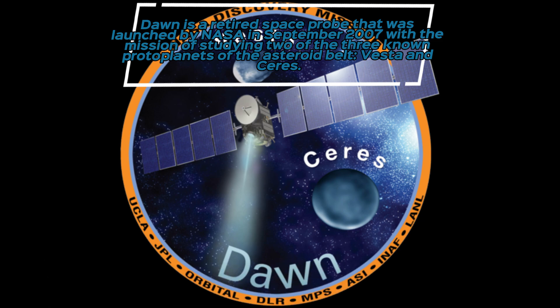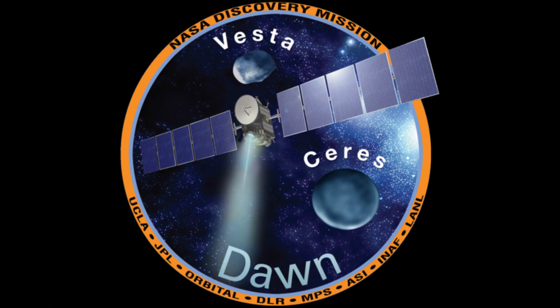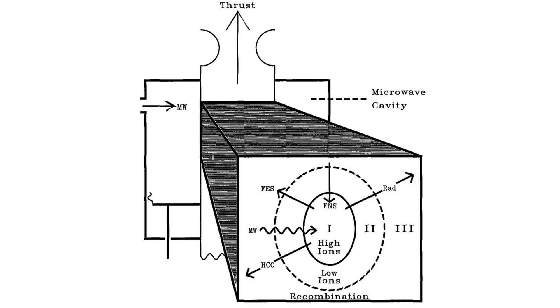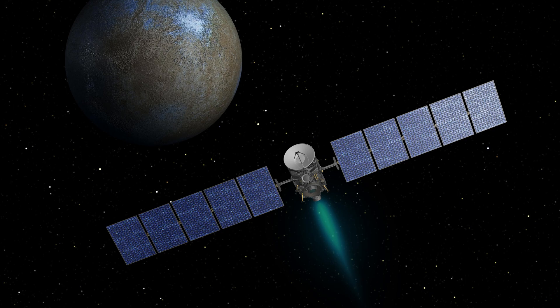The Dawn spacecraft broke the record with a velocity change of 11.5 km per second, though it was only half as efficient, requiring 425 kg of xenon.